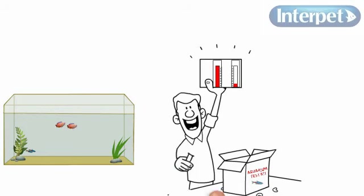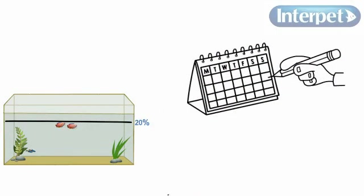For the first six weeks, do a weekly water change of 20% of your aquarium water volume to dilute and remove waste and toxins. Then proceed to do monthly water changes of 25% volume.